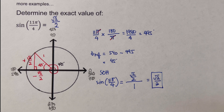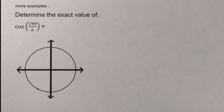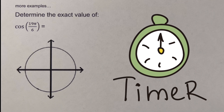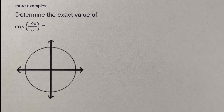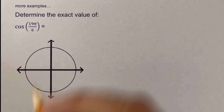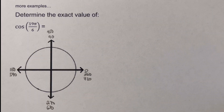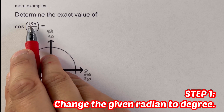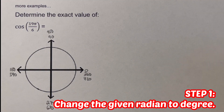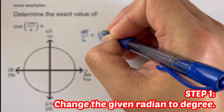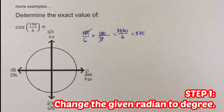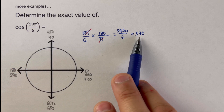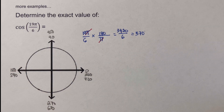Now let's move on to the next example. I encourage you to pause this video and try this problem on your own, then unpause and check your answer. The problem is cosine 19π/6. The first step is to change the given radian to degrees. This 19π/6 is equivalent to 570 degrees.